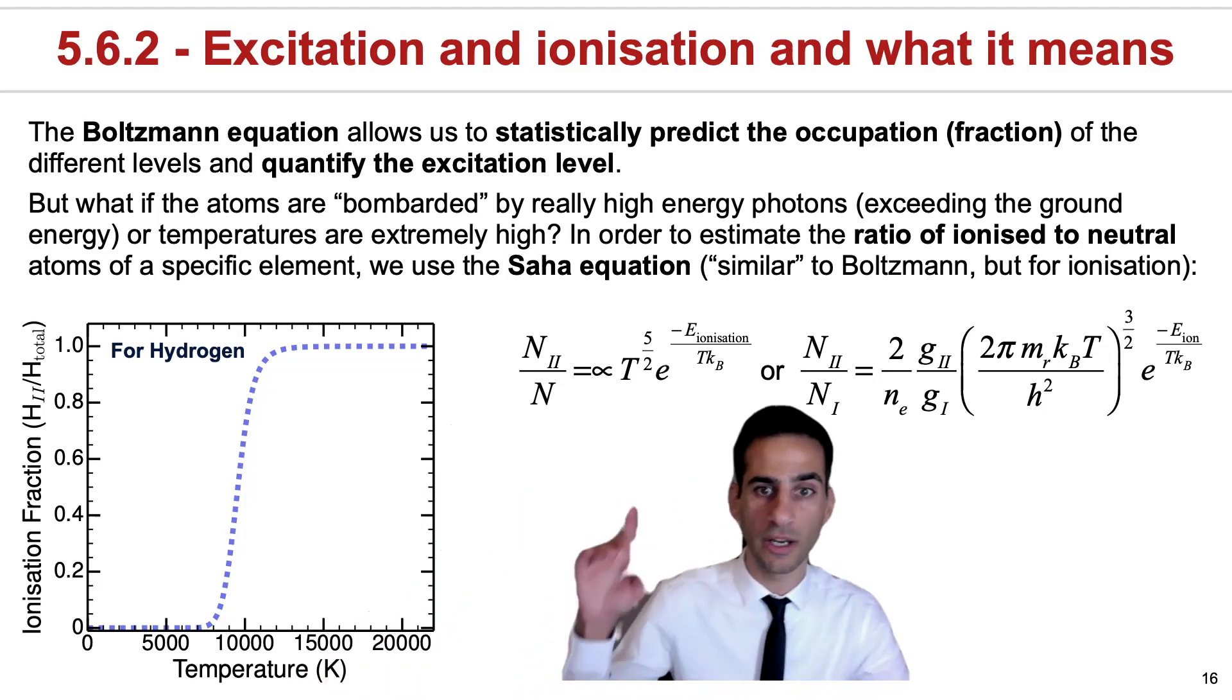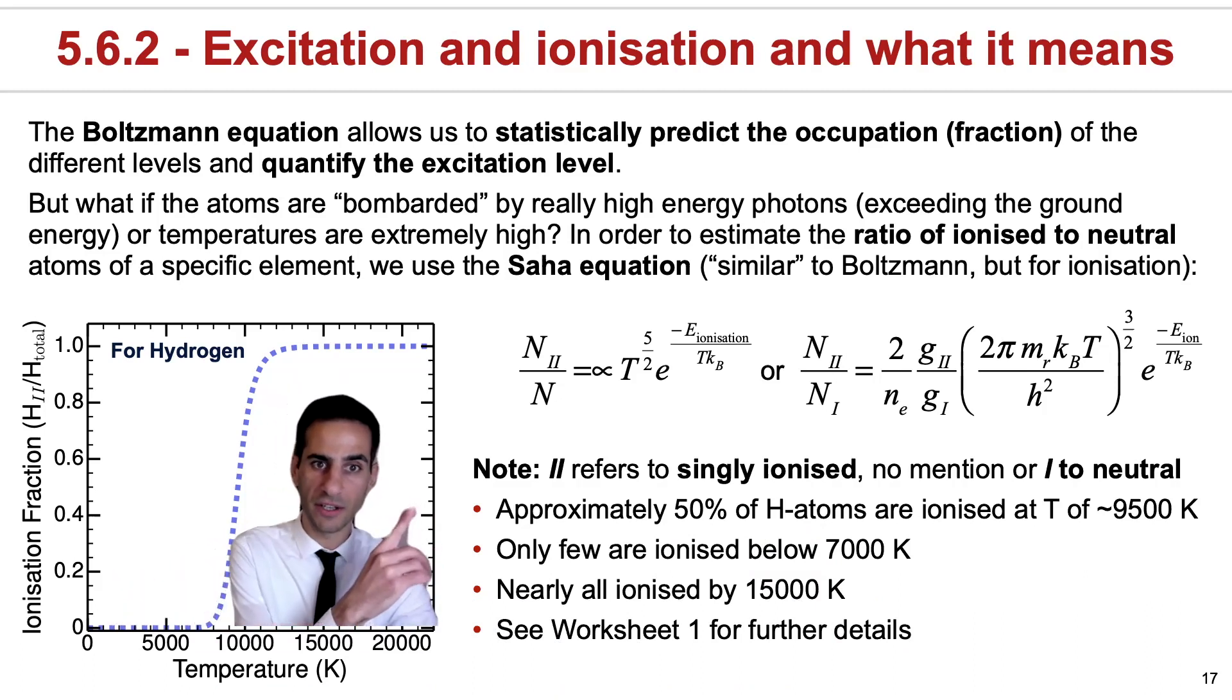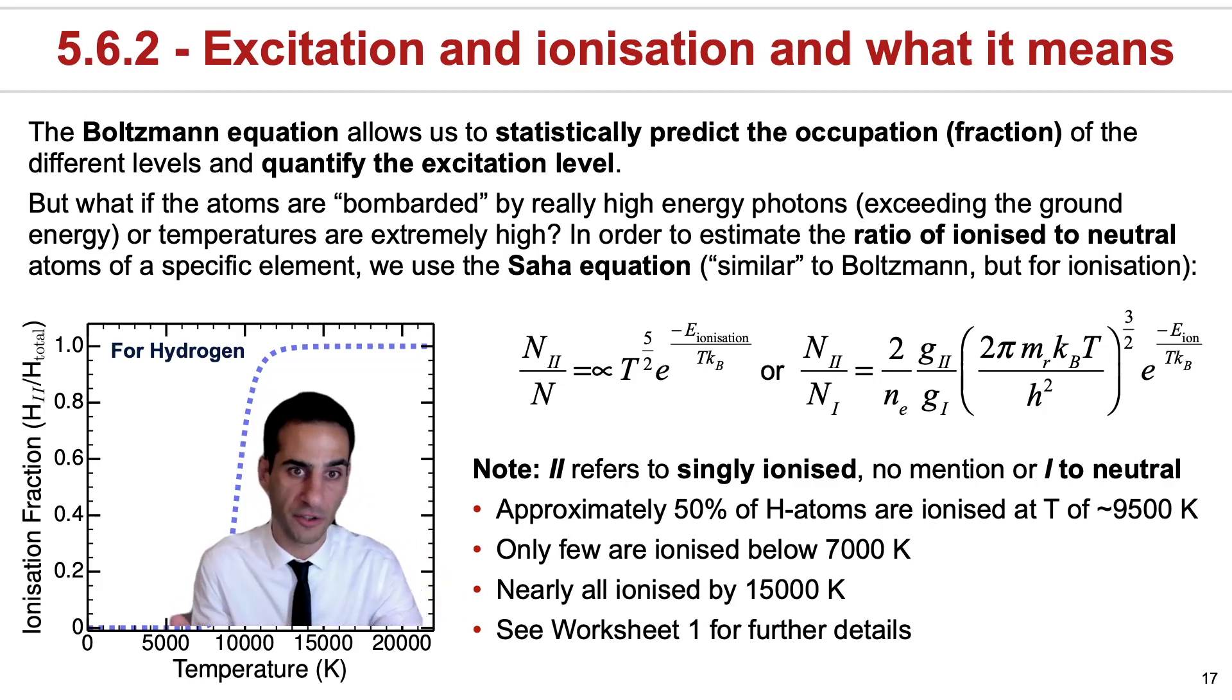This is because of the very strong temperature dependence. Now, it is important to note that you will encounter this notation that you see here. The 2 typically means singly ionized. And if you see a 1, that means neutral. And here, just see a quick summary of simple conclusions you would take if you use the Saha equation, for example, a cloud of hydrogen.